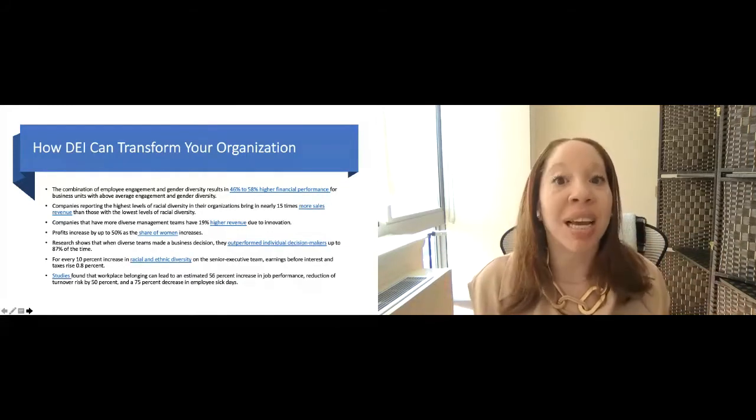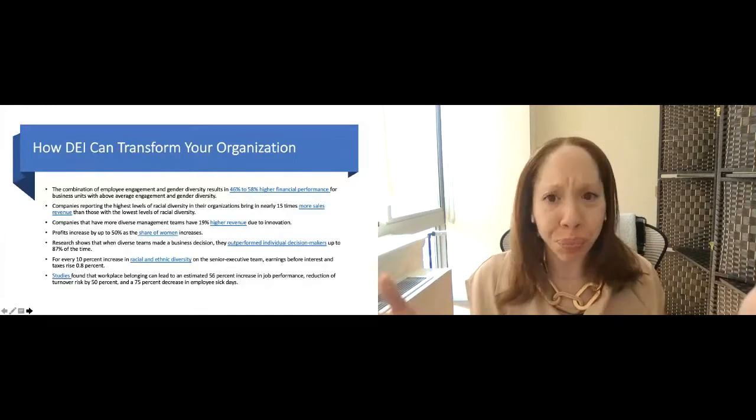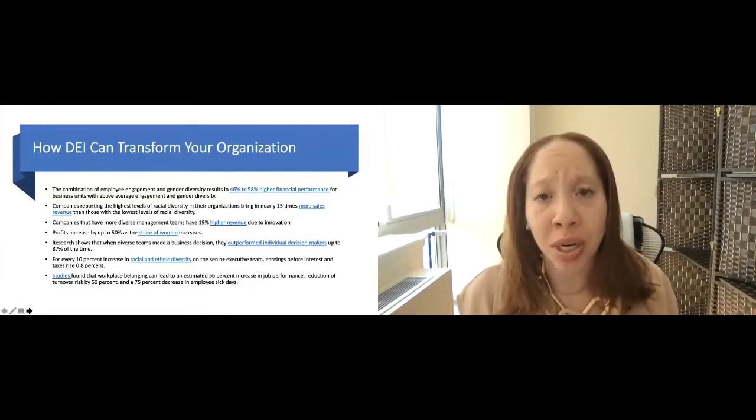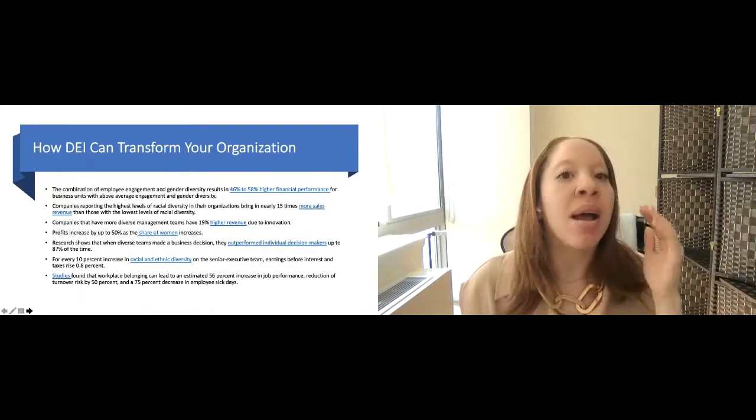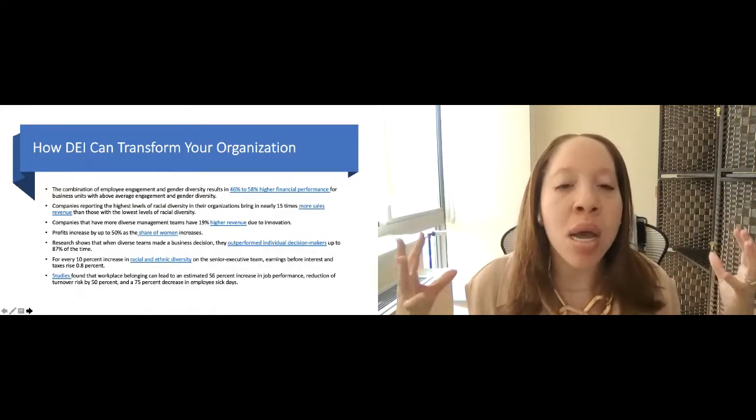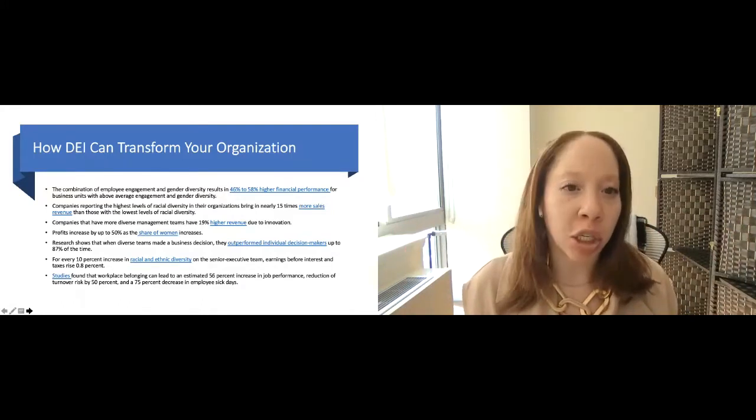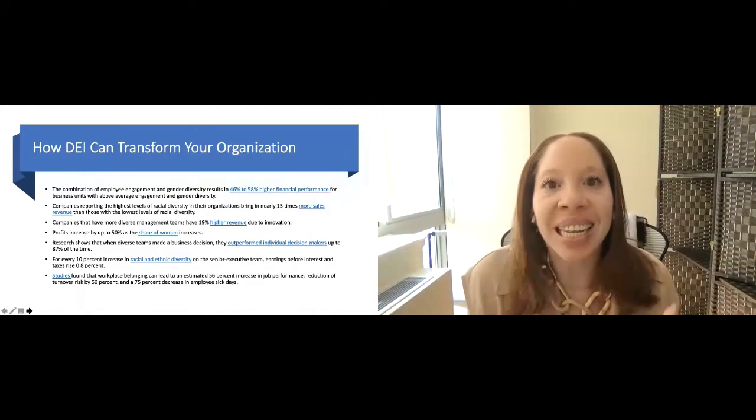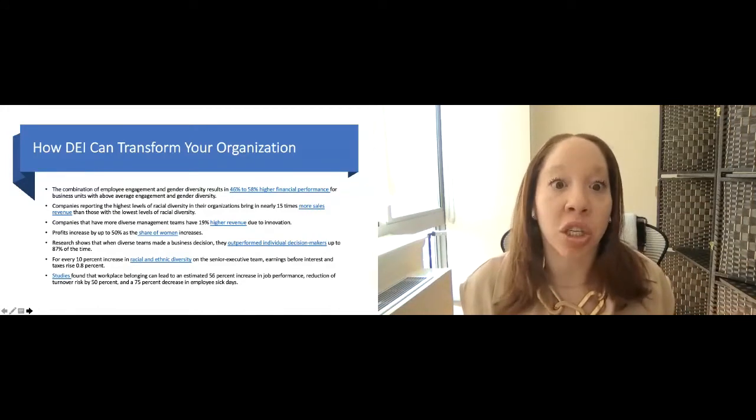This can literally take your business from middle of the line to absolutely competitor status once you have a roadmap in place. The numbers speak for themselves. And so there's no more longer the question of why. We now need to be thinking of how. How can we start to incorporate this type of transformation? How can we start to really live and breathe the D&I so that we can start to see the results?